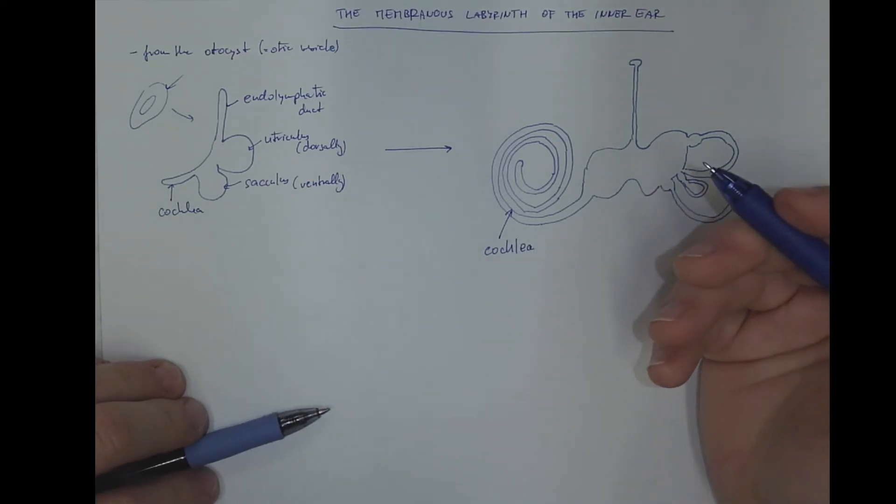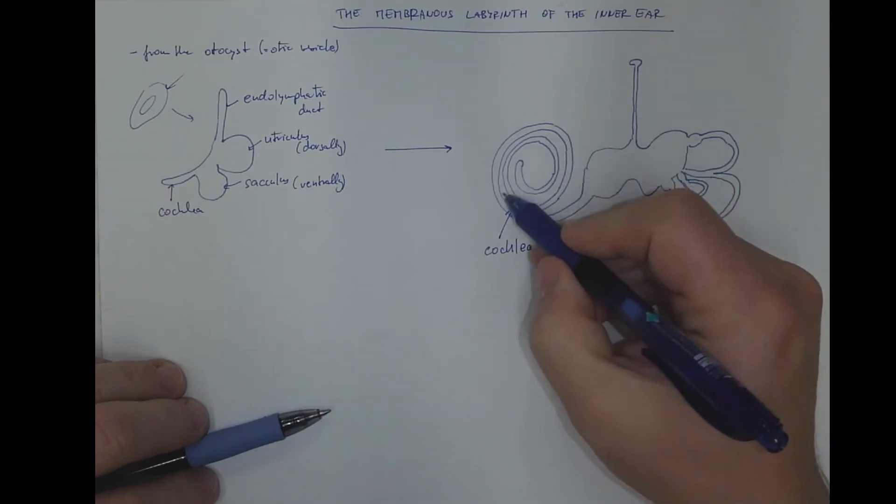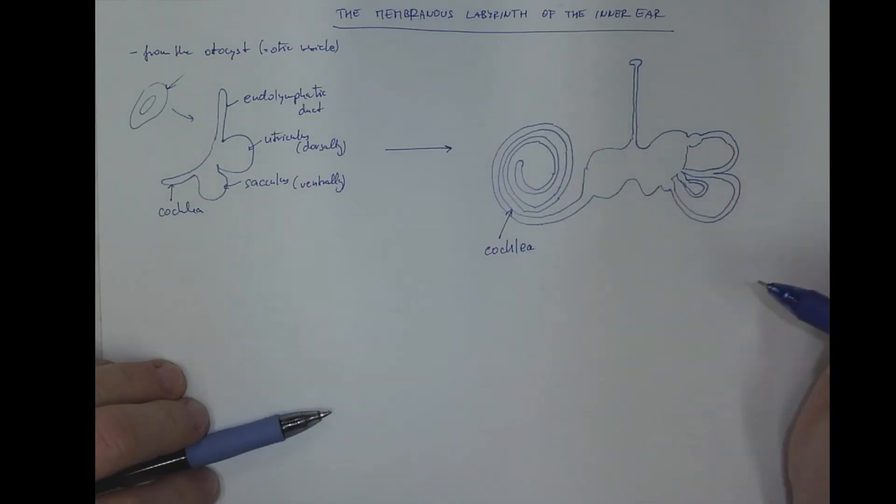Where the hearing receptors are located and arranged along this spiral organ.